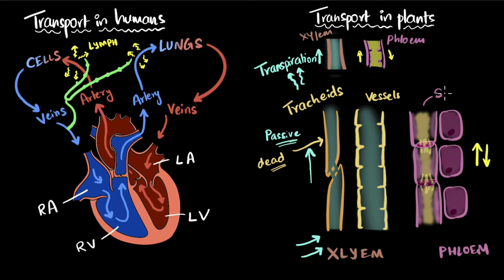Phloem contains these tubes called sieve tubes. Sieves refers to the tiny holes that you can see over here, which are there in the ends of the cells. Why is it like this and not completely hollow? Because these cells are alive. To keep them alive, you need some cytoplasm, you need some boundaries, and therefore you have perforations.